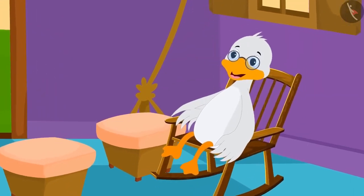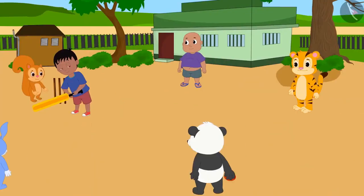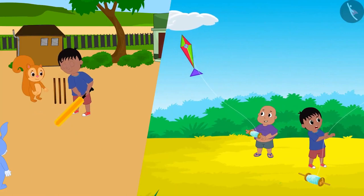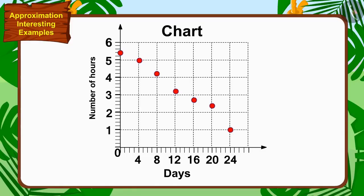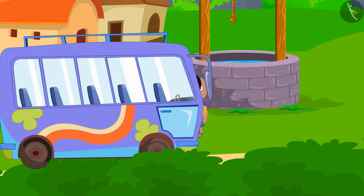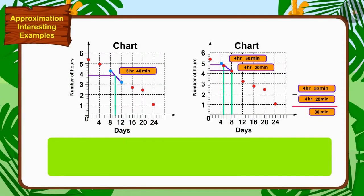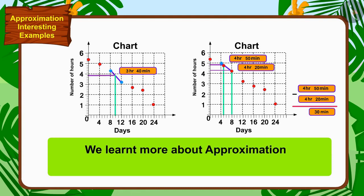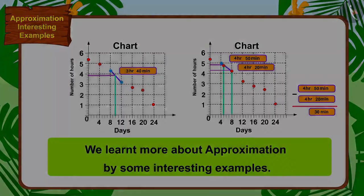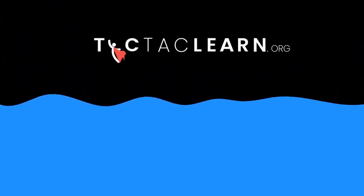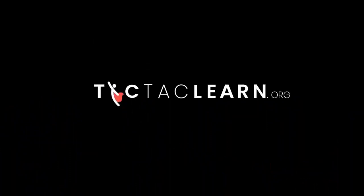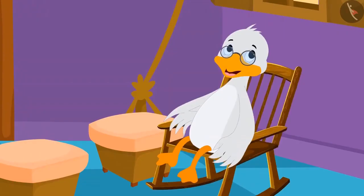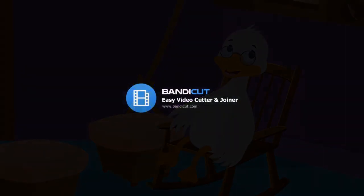Uncle is very happy that the children have now spent much less time on the phone and have started spending more time in sports and studies. As promised, uncle took the children on a trip seeing that the time spent on the phone has reduced. Children, in this video we learnt more about approximation through some interesting examples.